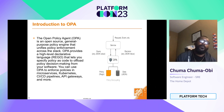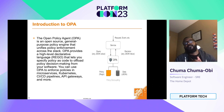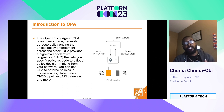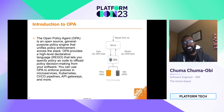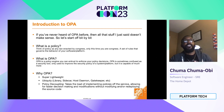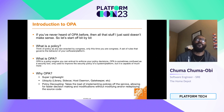Open Policy Agent is an open source, general purpose policy engine that unifies policy enforcement for your stack. It provides a high-level declarative language called Rego that lets you specify policy as code and offload policy decision making from your software. If you are new to OPA or new to this control structure, please don't be intimidated by that. If you've never heard of OPA before, all that stuff I just said might not make any sense — so let's start off bit by bit.